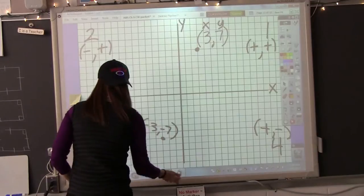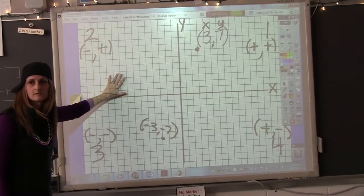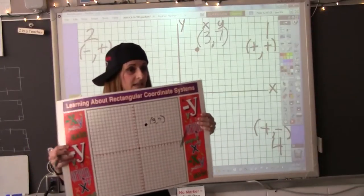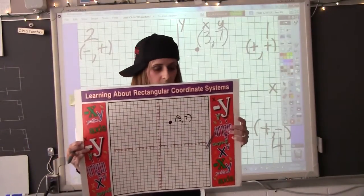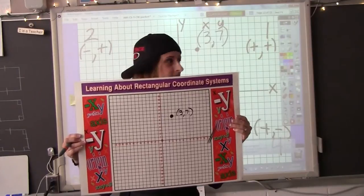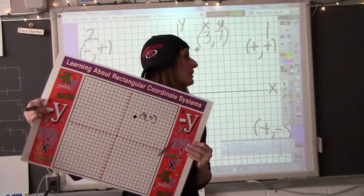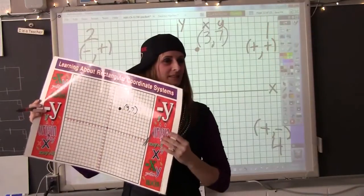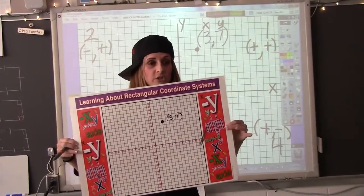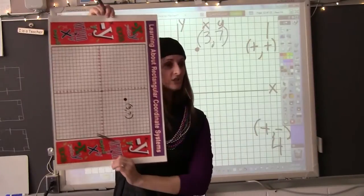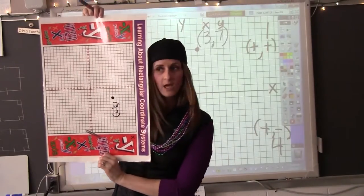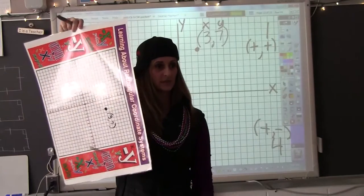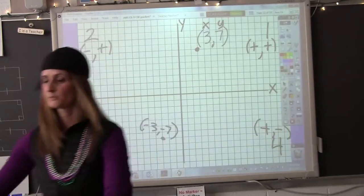We are going to rotate 90 degrees, change the x and the y, and then depending on whichever quadrant we're in, we're going to look at the signs, and that's going to be our signs for the new coordinates. So let's try it.